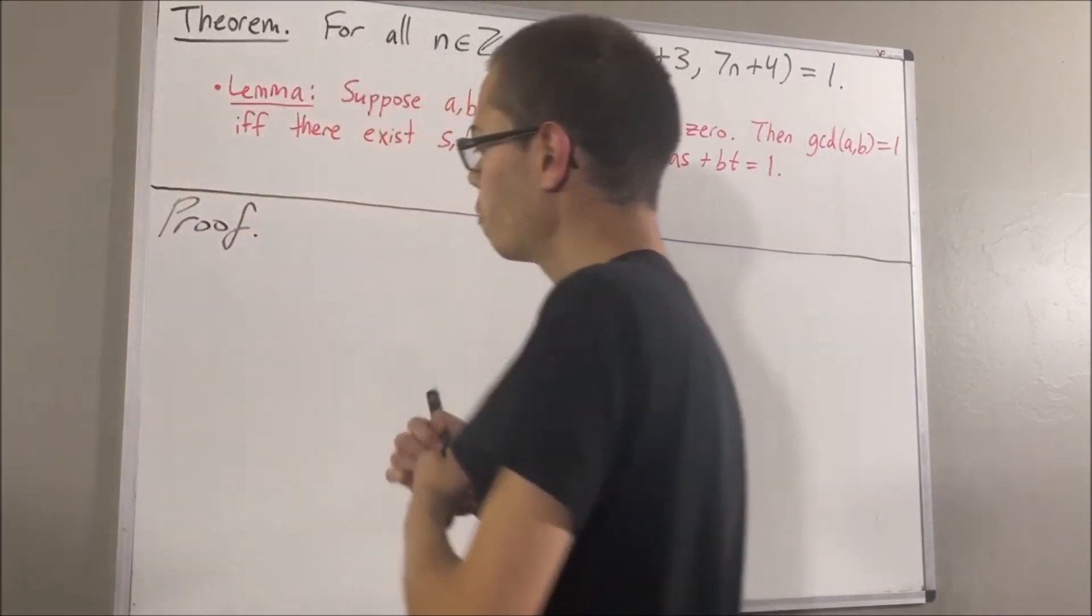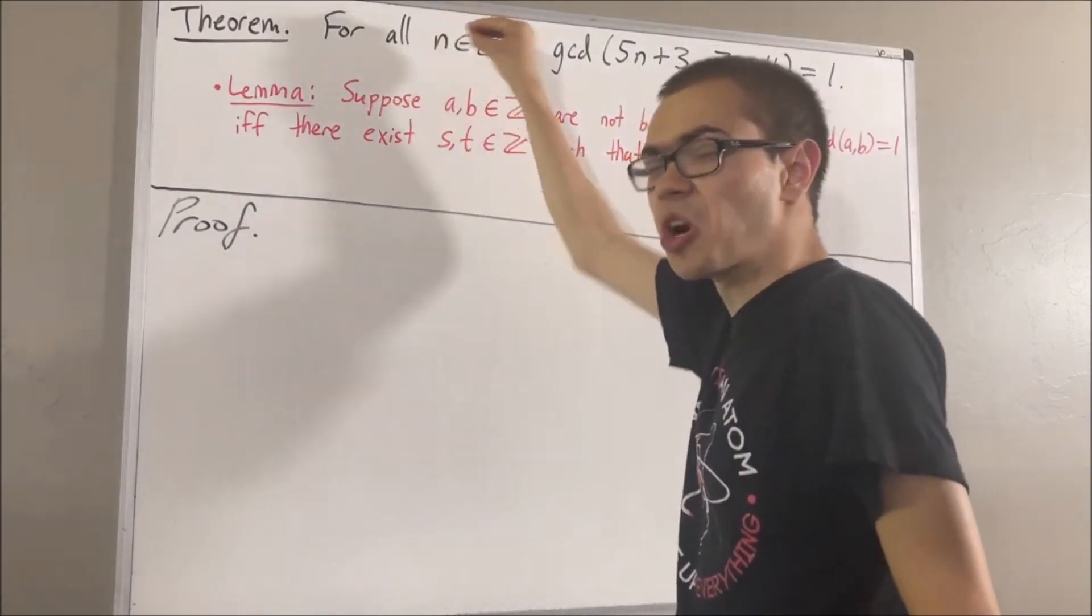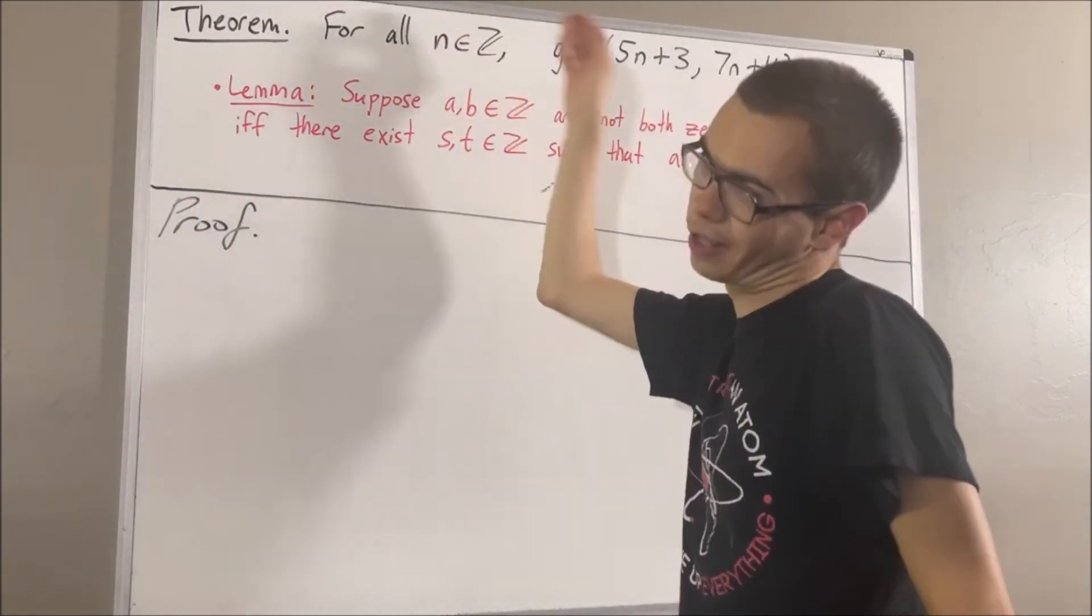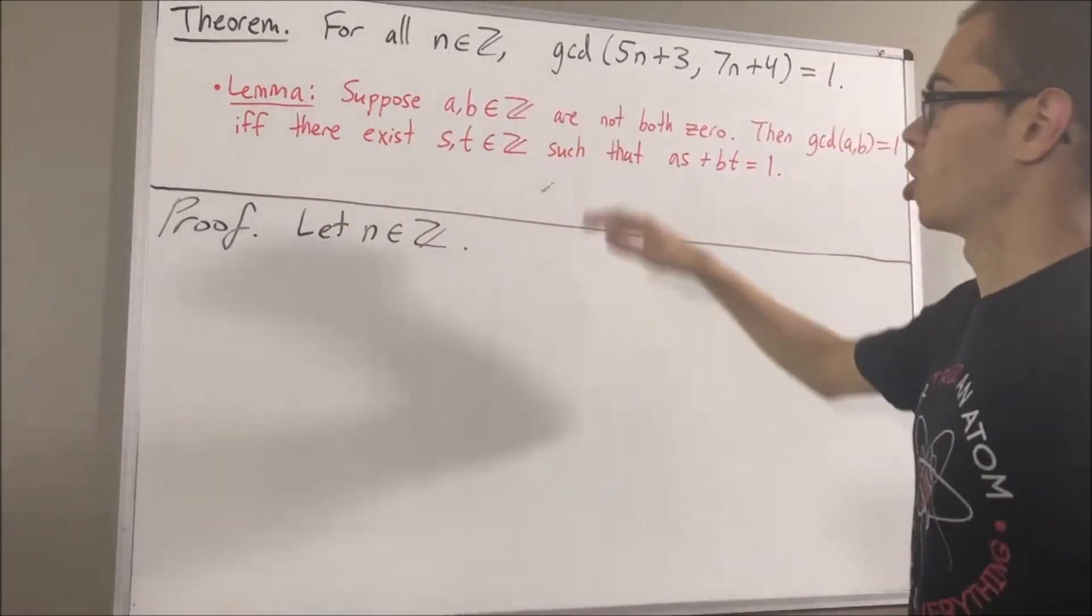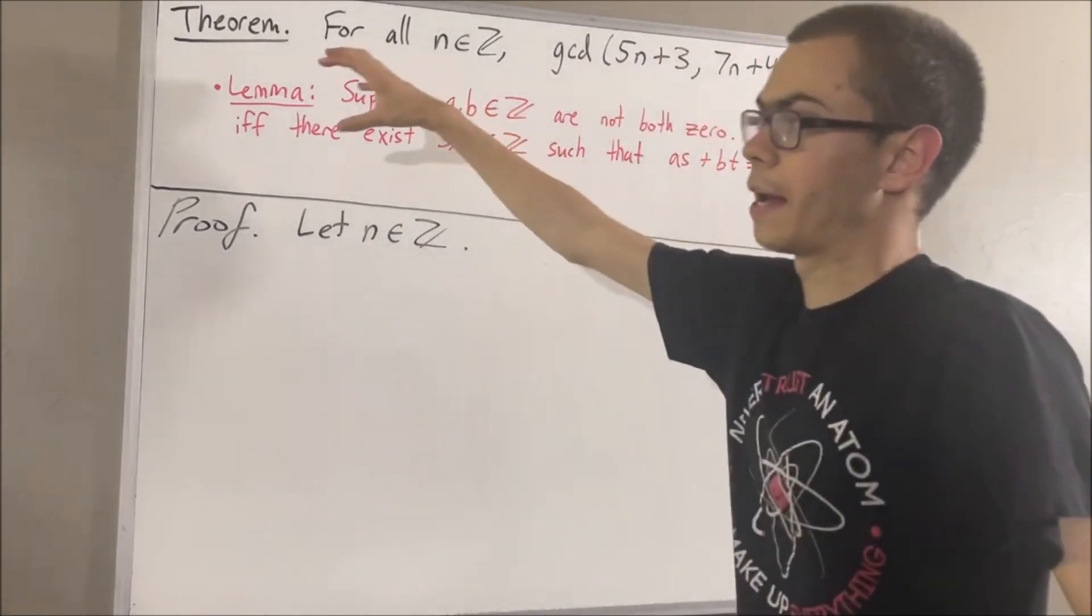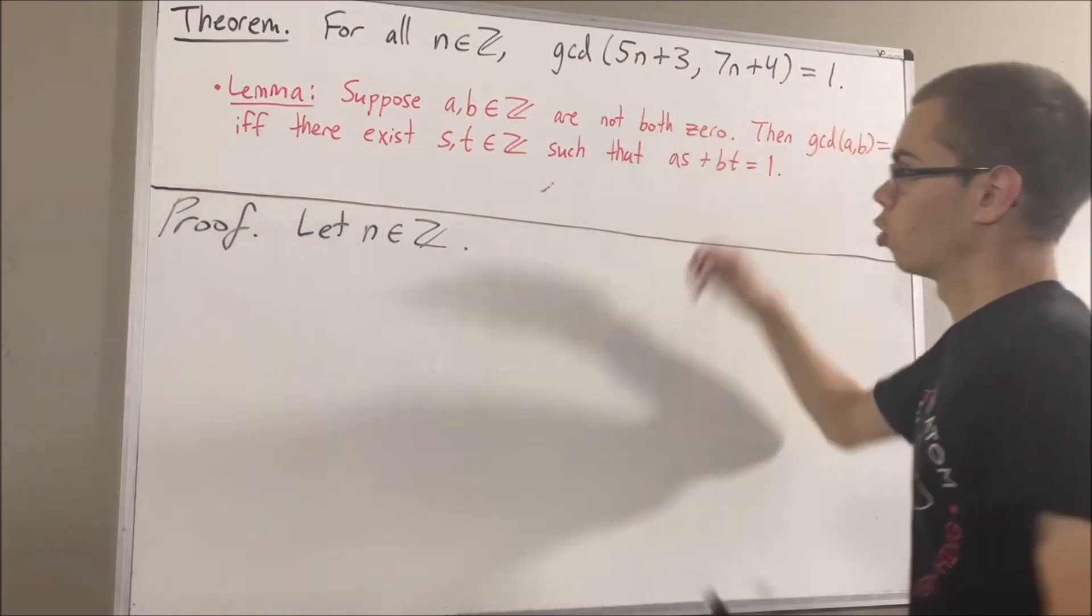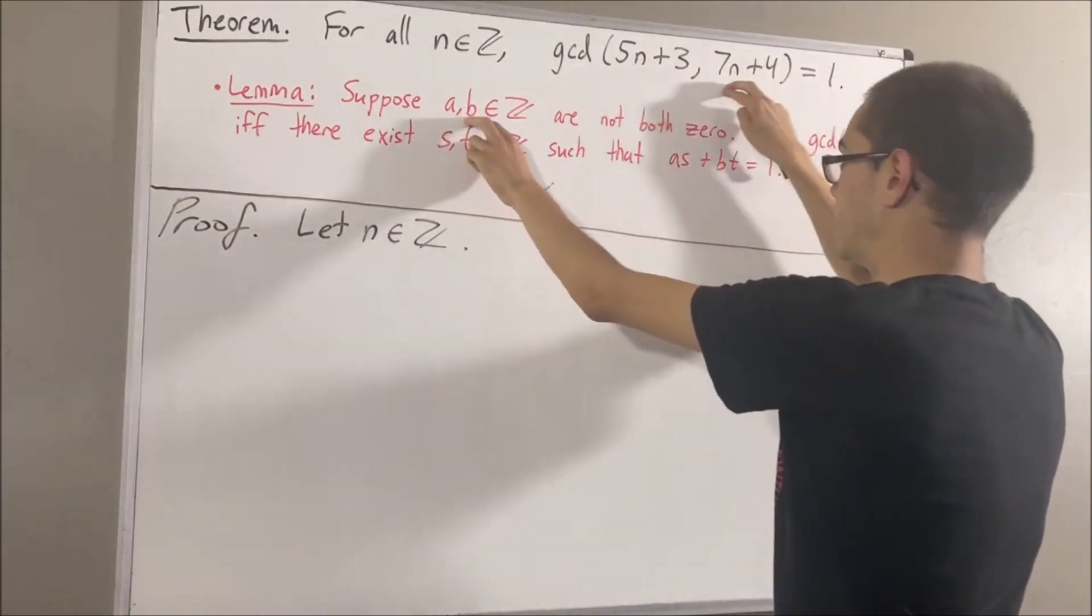So, to start on the proof, since we're trying to prove a statement about all integers, let's give ourselves an arbitrary integer. We'll call it n. And our goal from here is to show that this is true. And to show that this is true, we can apply our lemma. We're taking a to be 5n plus 3 and b to be 7n plus 4.